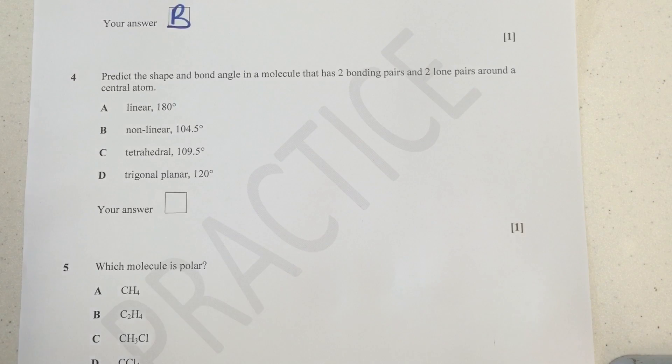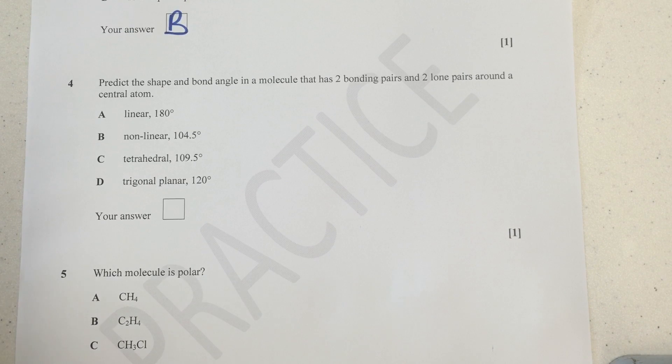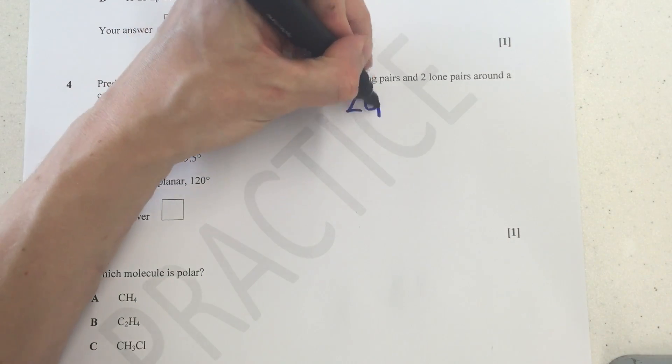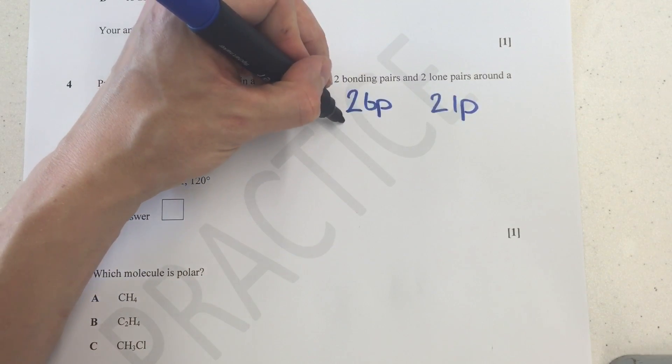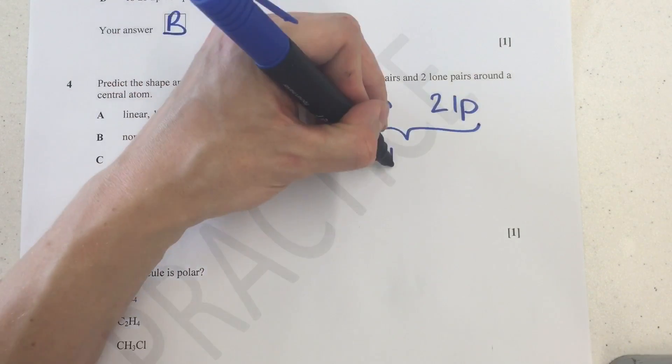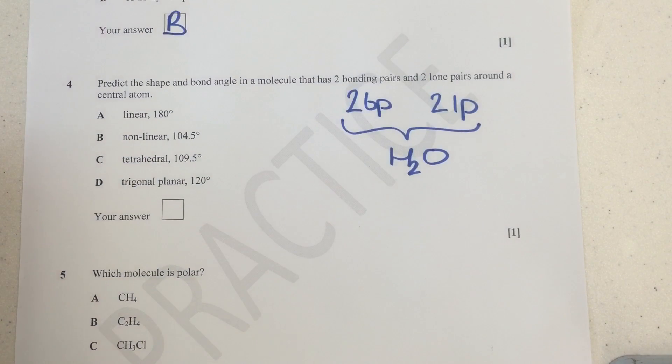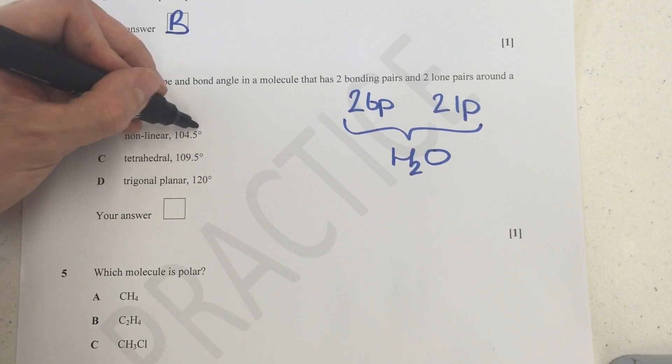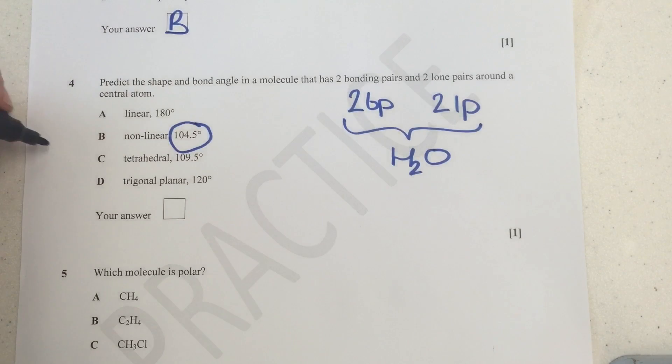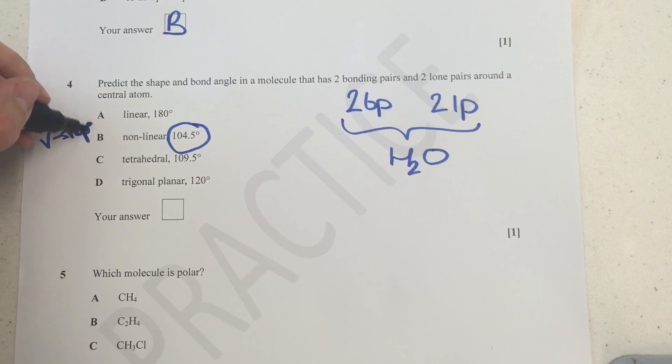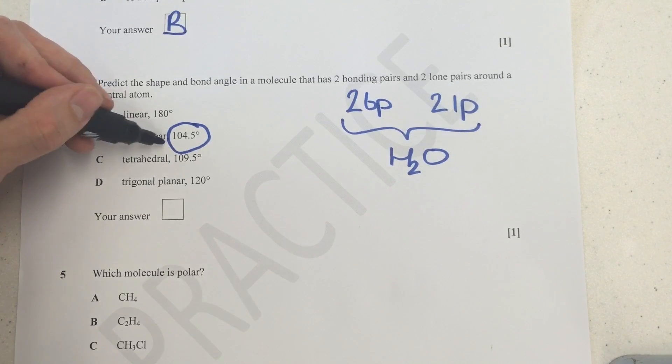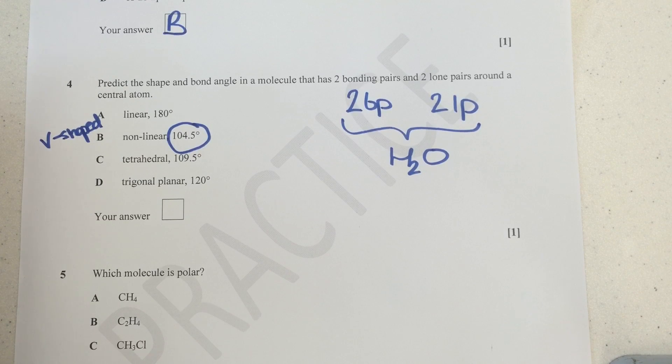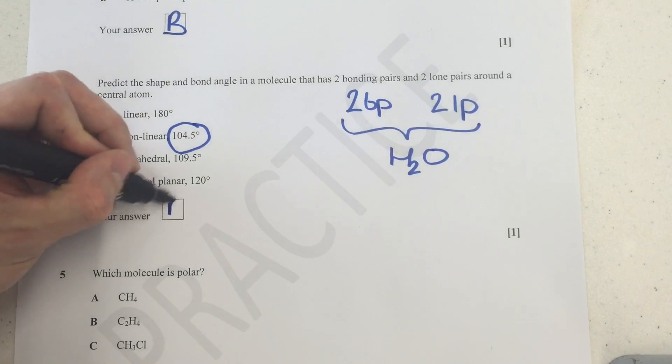Next one. Predict the shape and bond angle in a molecule that has two bonding pairs and two lone pairs around a central atom. Now, if you've revised this well, you know that two bond pairs and two lone pairs is actually a little bit of a clue here for H2O. That's got that combination, and we know H2O is a non-linear shape. Sometimes you can call this V-shaped, but notice that in a multi-choice, OCR seems to have bended towards calling it a non-linear shape. So it's worth noting that non-linear is more likely to appear in their mark schemes and in other questions as well. So our answer here has got to be B.